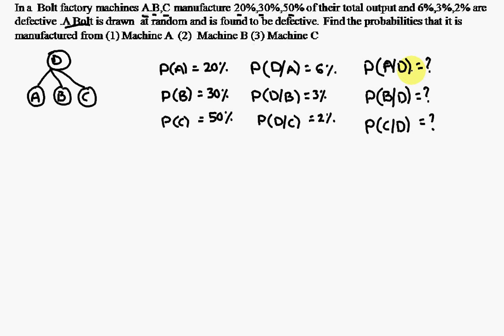Suppose a defective bolt is chosen at random. First question: a bolt is drawn and found to be defective — what is the probability that it is from machine A? Second question: a bolt is chosen randomly and found to be defective — what is the probability that it is from machine B? Third question: a bolt is found to be defective — what is the probability that it is from machine C?